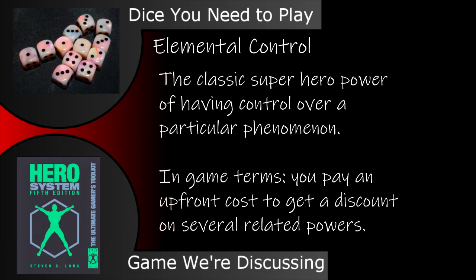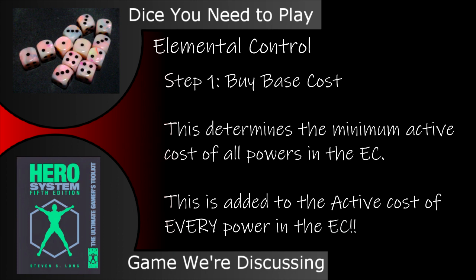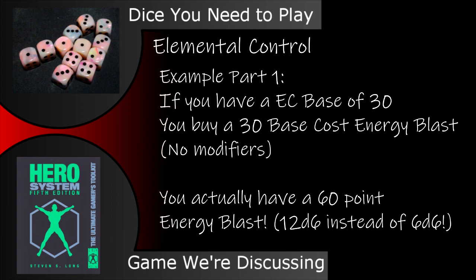Elemental controls are the classic superhero ability of having a bunch of related powers, usually like controlling fire or ice — you know, the elements. They allow you to pay a large amount of points up front to get discounts on a few related powers. The first step is you buy the base cost of the control. This determines the minimum strength of every power in the elemental control. Each slot you buy must have an active cost equal to or greater than the base cost of the control.